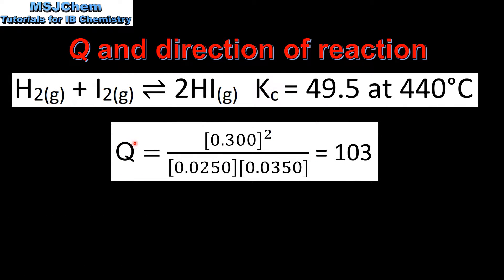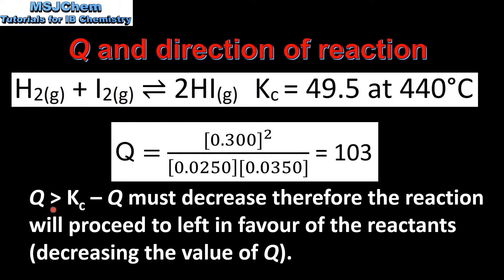If we calculate the reaction quotient Q at a different point in time and get a value of 103, by comparing Q and Kc we can determine the direction of reaction. Since Q is greater than Kc, Q must decrease, therefore the reaction will proceed to the left in favor of the reactants, decreasing the value of Q.